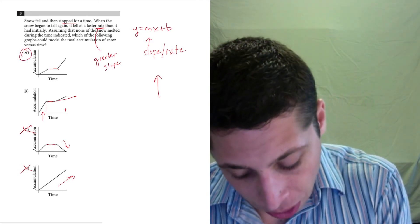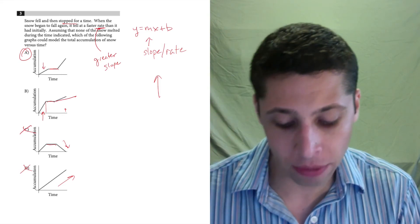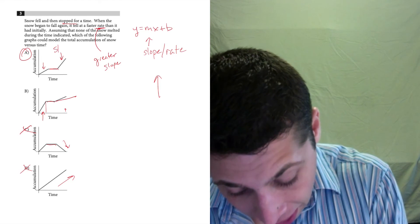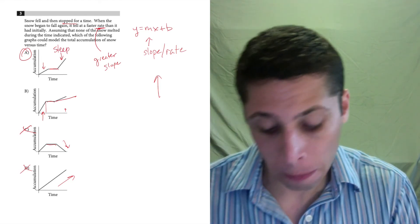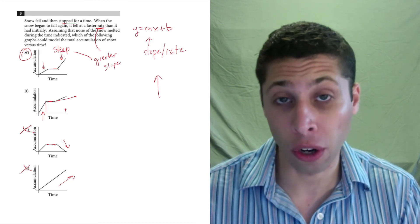So look at that compared to choice A, which is the answer. This line here is relatively flat compared to this line here, which is much steeper and represents the greater slope, the faster rate of snow falling.